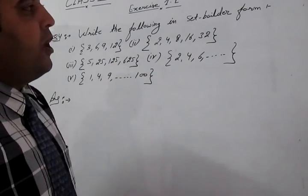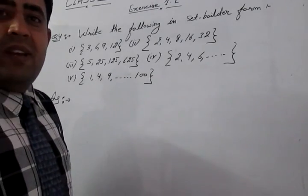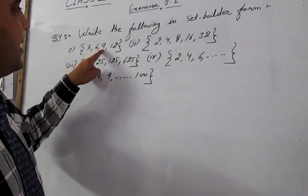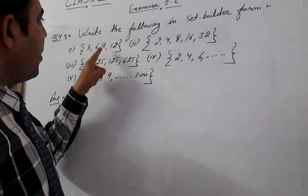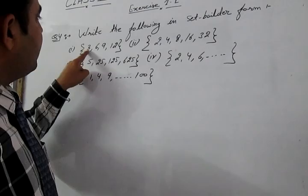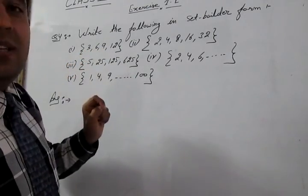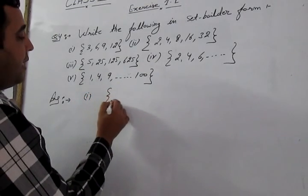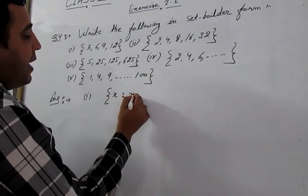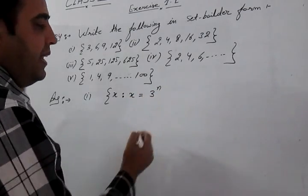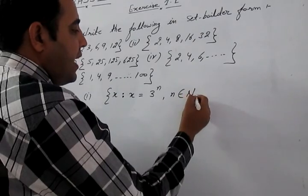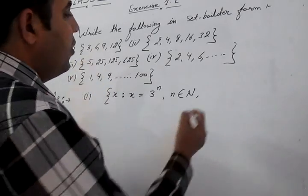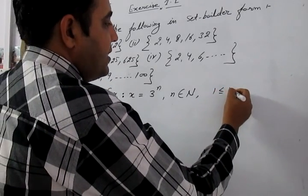Question 4: Write the following in set builder form. Part 1: given {3, 6, 9, 12}. The common property is that these are multiples of 3. So we write: x such that x = 3n, where n ∈ N and 1 ≤ n ≤ 4.